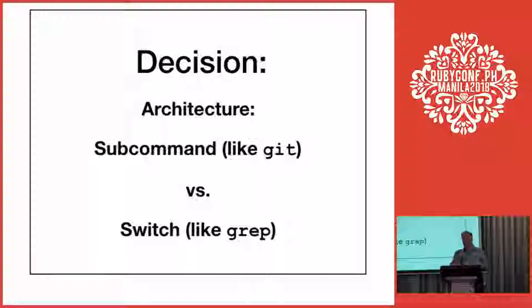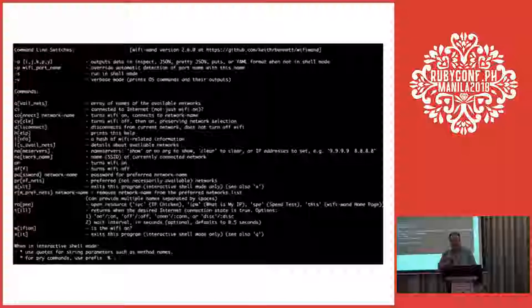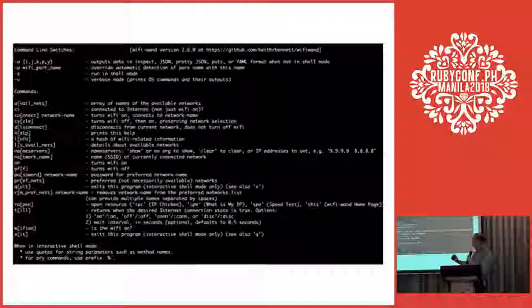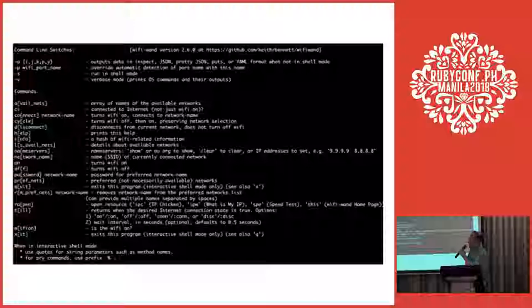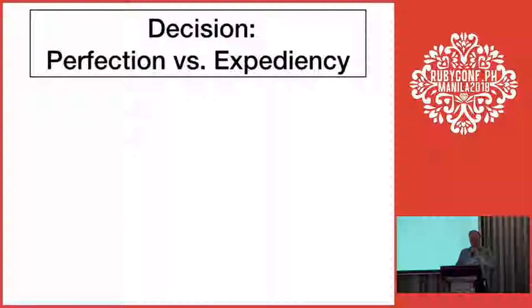There were several decisions I had to make when I started writing this. One was: do I want to use subcommands like Git does, or switches like Grep does? I started out with just subcommands, but then found I needed switches too. Here's the help text — the command line switches are at the top and the commands are down here. So I wound up doing both switches and commands.